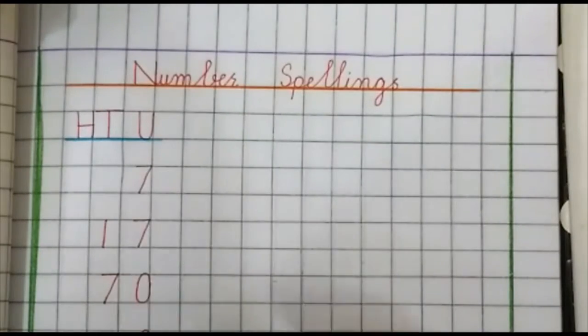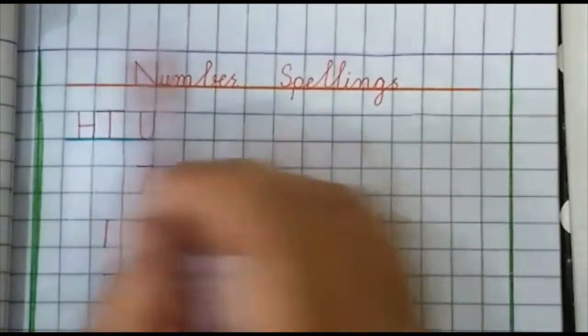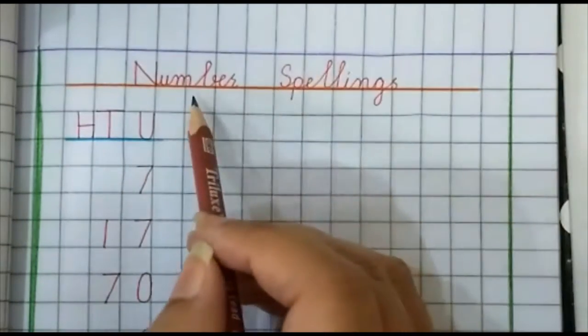Assalamu alaikum prep class. Today we are going to do number spellings from second term. First of all mention CW, date and day. Now we start number spellings.